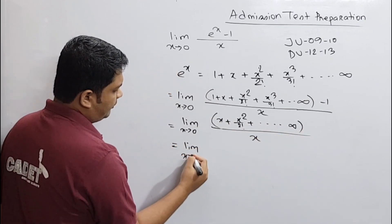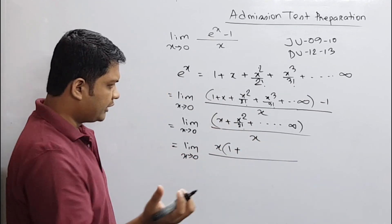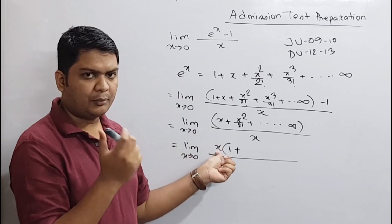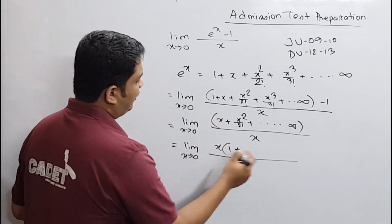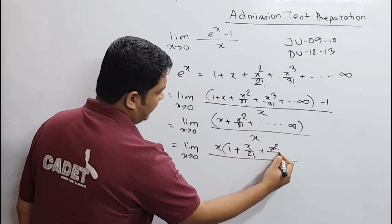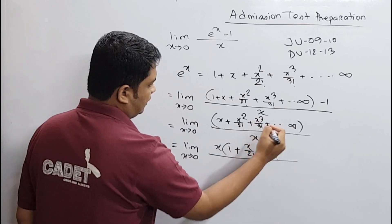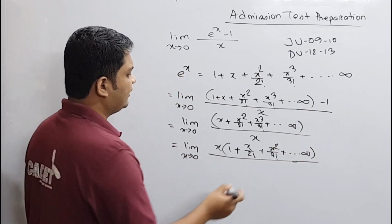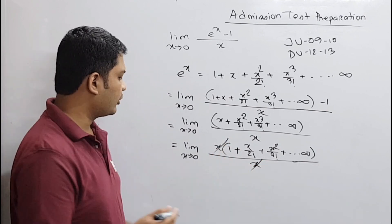So here x is common. Taking x as common, we get 1 plus x by 2 factorial plus x squared by 3 factorial, and so on with infinite terms. Then x divided by x cancels out.